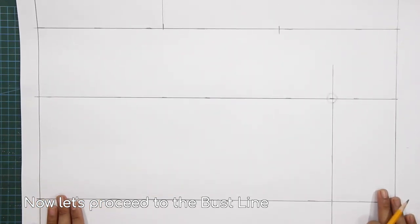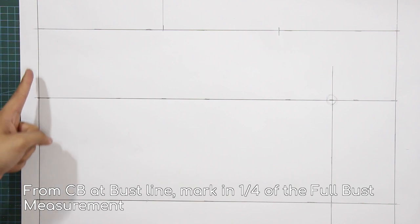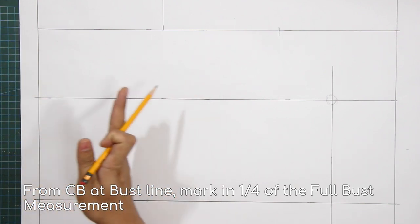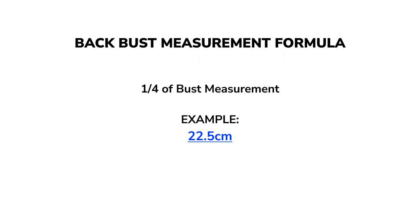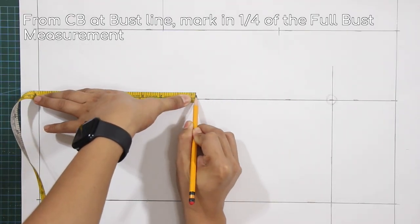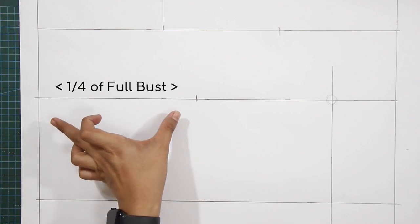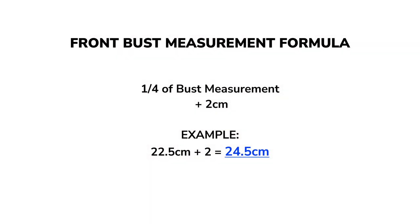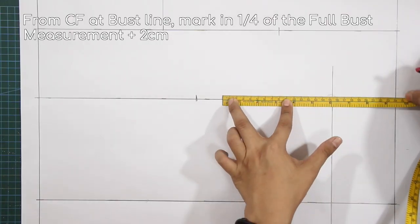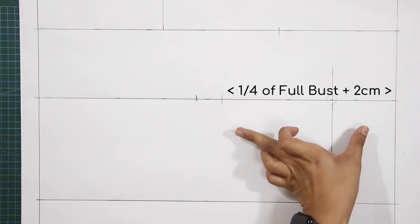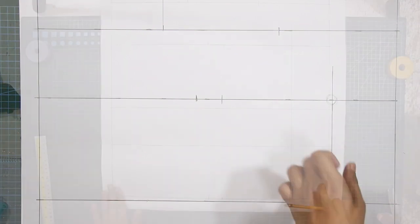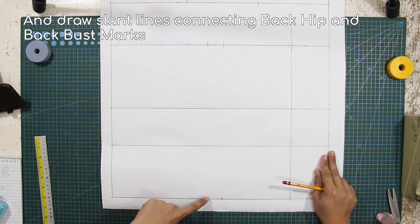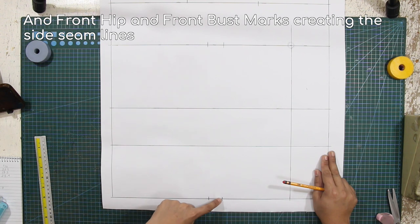Now let's proceed to the bust line. From center back at bust line, mark in one fourth of the full hip measurement. From center front at bust line, mark in one fourth of the full bust measurement plus 2 centimeters. Draw slant lines connecting back hip and back bust marks, and front hip and front bust marks, creating the side seam lines.